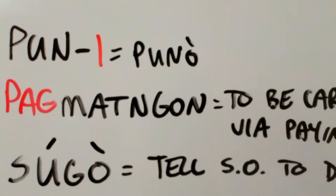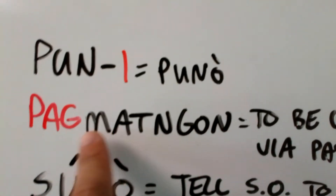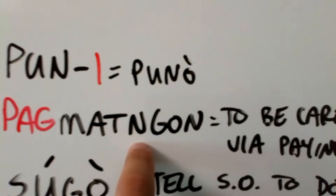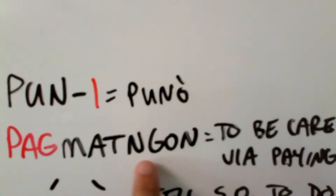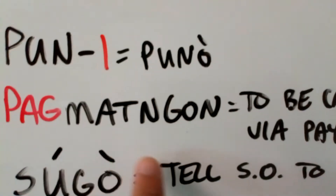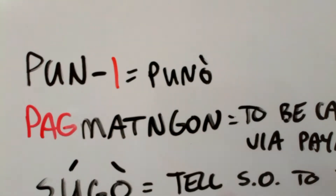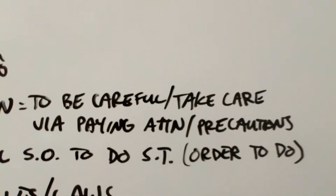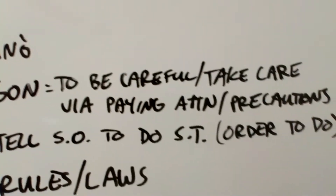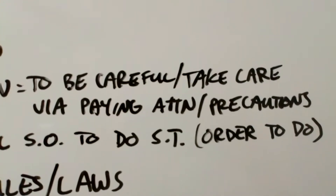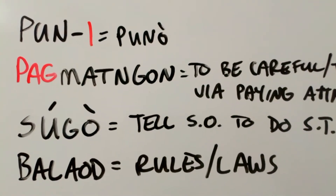The next word is a little difficult to pronounce — it's pagmatngon. The root word here is matngon. We have a stop consonant 'ta' and the velar nasal consonant 'nga.' This might make it difficult to pronounce, but if you say it syllable by syllable, it'll be easy. Pagmatngon. Matngon is the root word and it means to be careful or take care by paying attention to precautions. You're handling something with care and paying attention because you don't want to make a mistake or have an accident. So that's why you're taking precautions — matngon is actually a very useful verb to use.